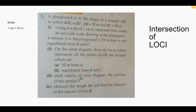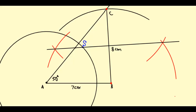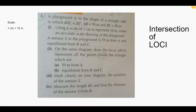In the third part, mark clearly on the diagram the position of the seesaw. The seesaw is 5.5 centimeters from A, placing it on the circle, and it is also on the perpendicular bisector inside the triangle. These two loci meet and intersect each other, so the seesaw will be at that intersection point.